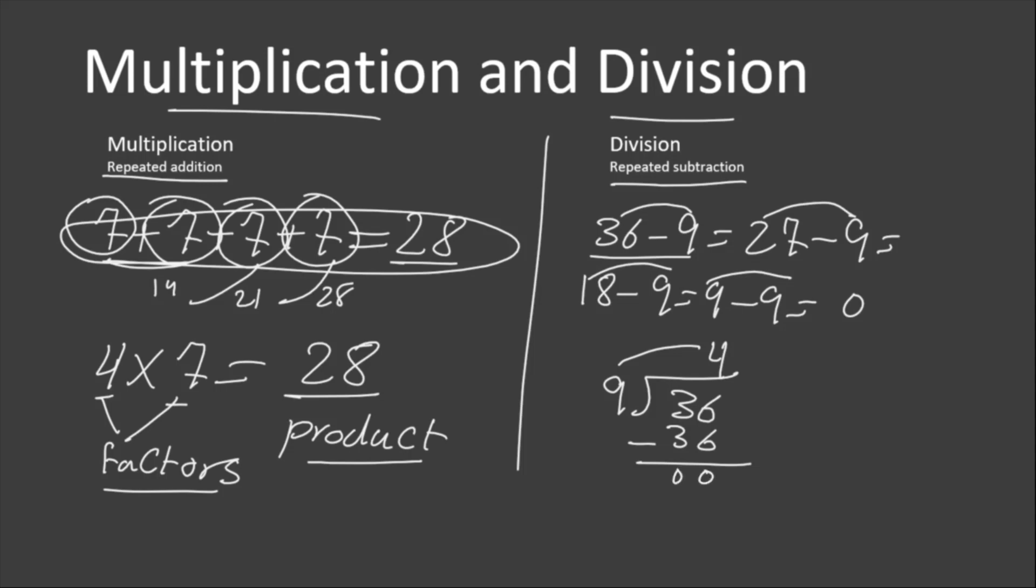Now, the number which is divided is called dividend. The number which is going to be divided into dividend is called divisor. And the result of division is called quotient. So the result we get after dividing 36 by 9, which is 4, is called quotient. These are the parts of division.